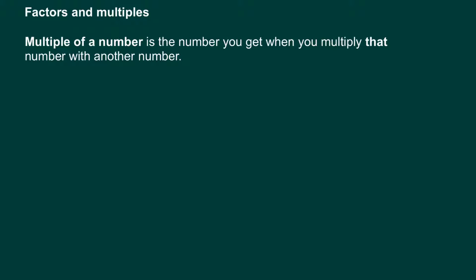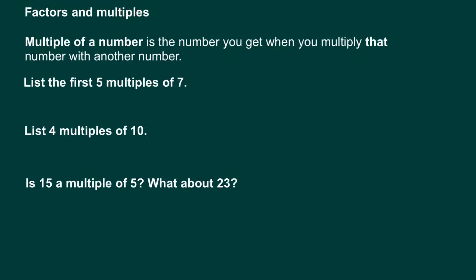In this part of the lecture, we're going to learn about factors and multiples. A multiple of a number is the number that you get when you multiply that number with another number. So let's have a look at three basic examples. First question says, list the first five multiples of seven. Remember, a multiple is simply a number that you get when you multiply a specific number with another number.